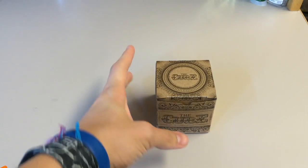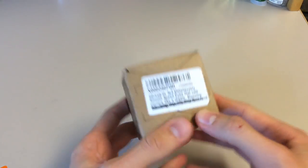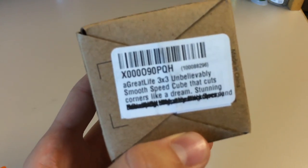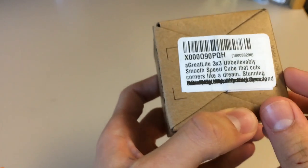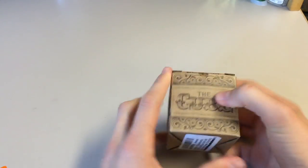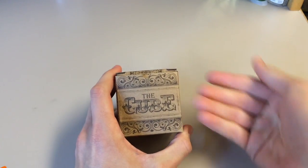On the bottom, I thought this was pretty funny. It says A Great Life 3x3, unbelievably smooth speed cube that cuts corners like a dream. Stunning, and then something, it cuts out. I really like the box. I haven't really been going over the boxes and unboxings at all, but this is a pretty cool box.